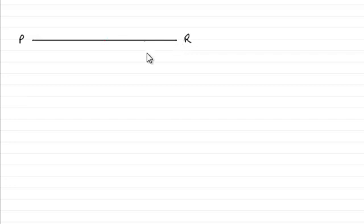So it rests we're told on supports, one at P so we'll just mark that in as a support there at P and another one at Q which is 2 meters from R. So we'll have another support here, call it Q, and this length will be 2 meters.